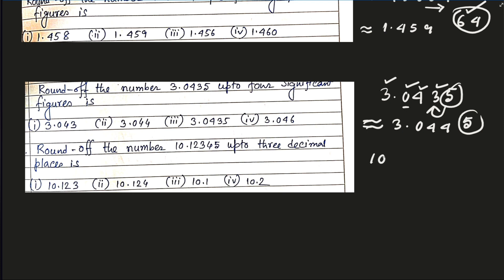Next one is 10.12345, up to three decimal places. First decimal place, second, third. Discard 4, which is less than 5. Definitely the third decimal place remains: 10.12345. Option one is the right option.